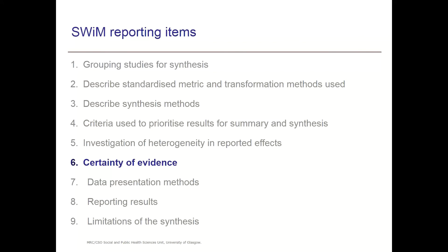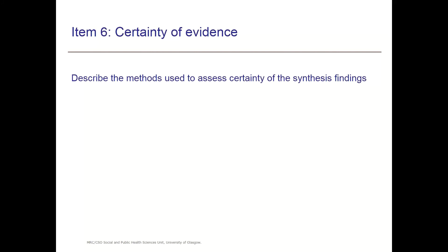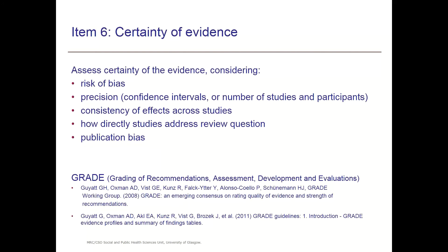We now come to reporting certainty of the evidence. Item 6 says: describe the methods used to assess certainty of the synthesis findings. We want to report how we assess certainty of the evidence, and the domains in GRADE for assessing certainty are: examining risk of bias; looking at precision and providing confidence intervals; and, particularly if that's not available, reporting the number of studies and number of participants in that piece of analysis. We can also look at consistency of effects across studies, how directly our included studies address our review question, and we can examine publication bias. This item asks us to clearly report what we have used to assess the certainty.